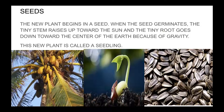Seeds — almost all of us are familiar with seeds because we eat them. The new plant begins in a seed. When the seed germinates, the tiny stem raises up and the tiny root goes down toward the center of the earth because of gravity. This is a type of tropism — a reaction to stimuli. The little stem growing up is a negative response to gravity, and the little root going down is a positive response. This particular type of tropism is called geotropism or gravitropism.